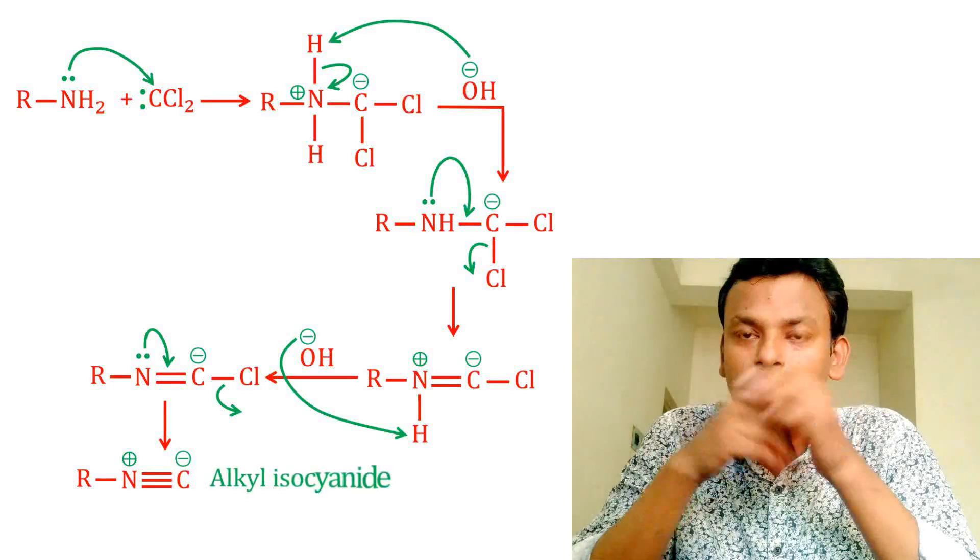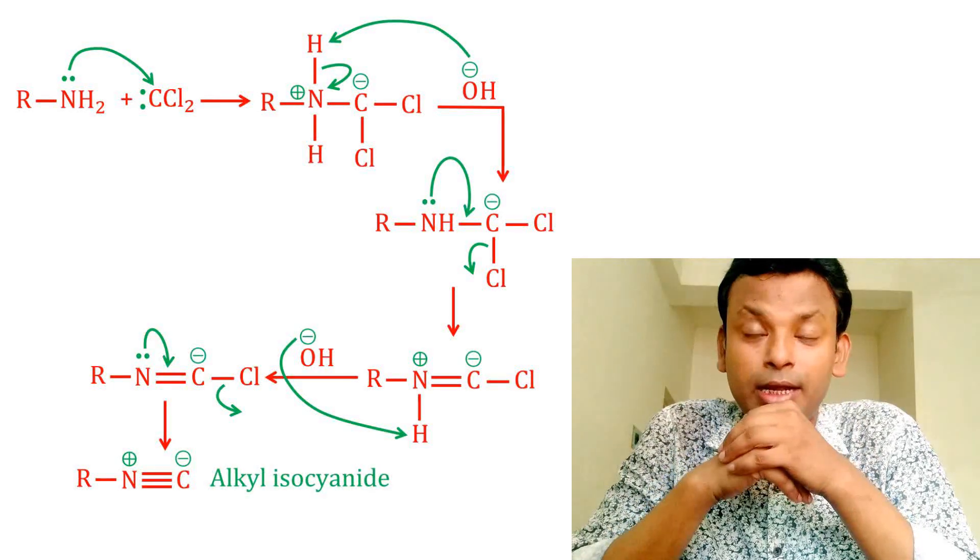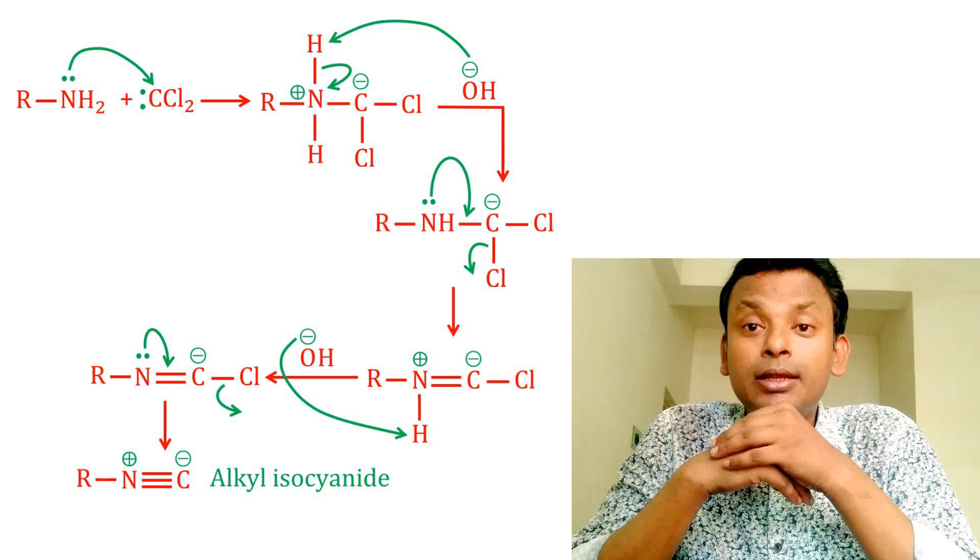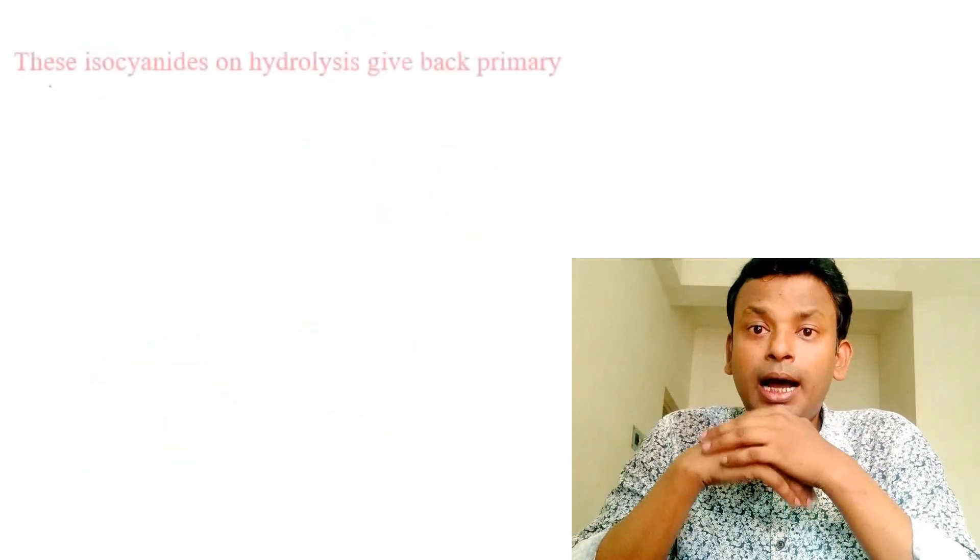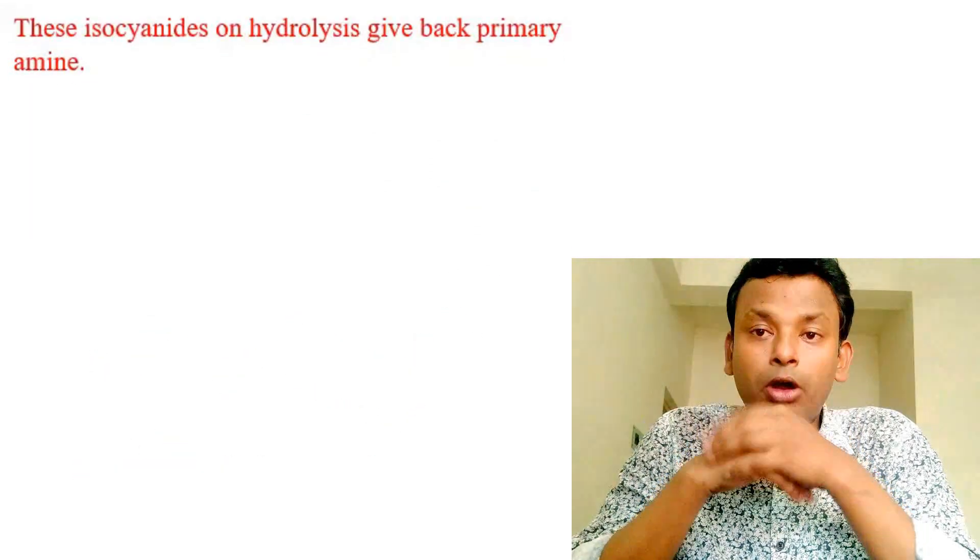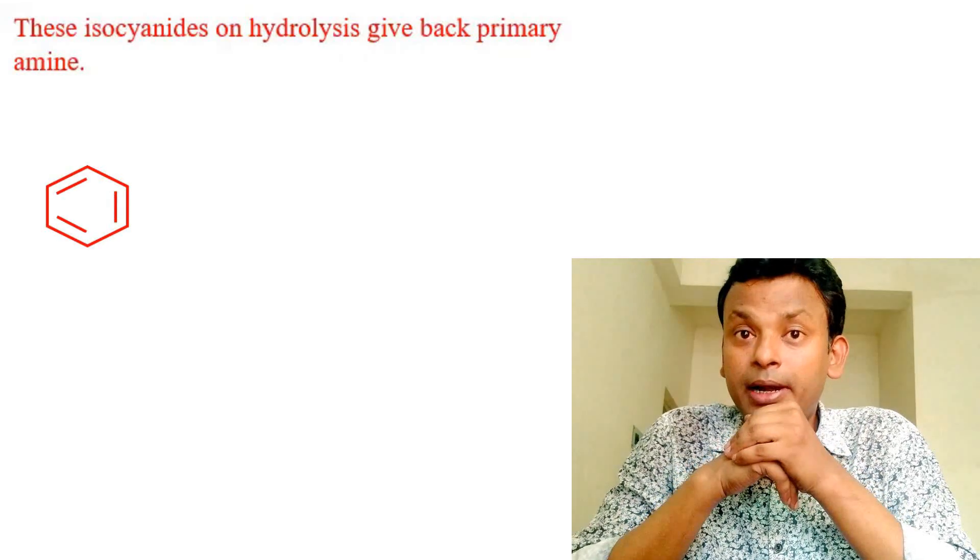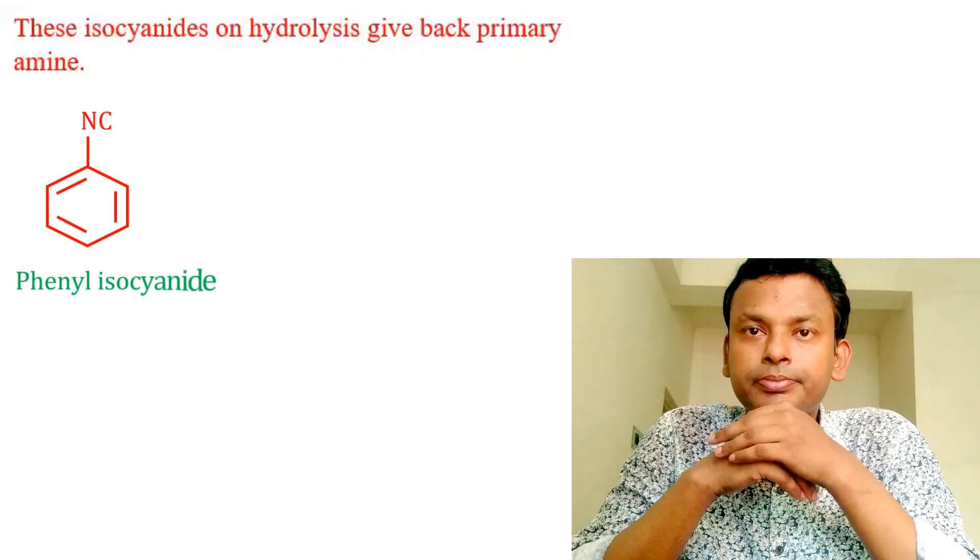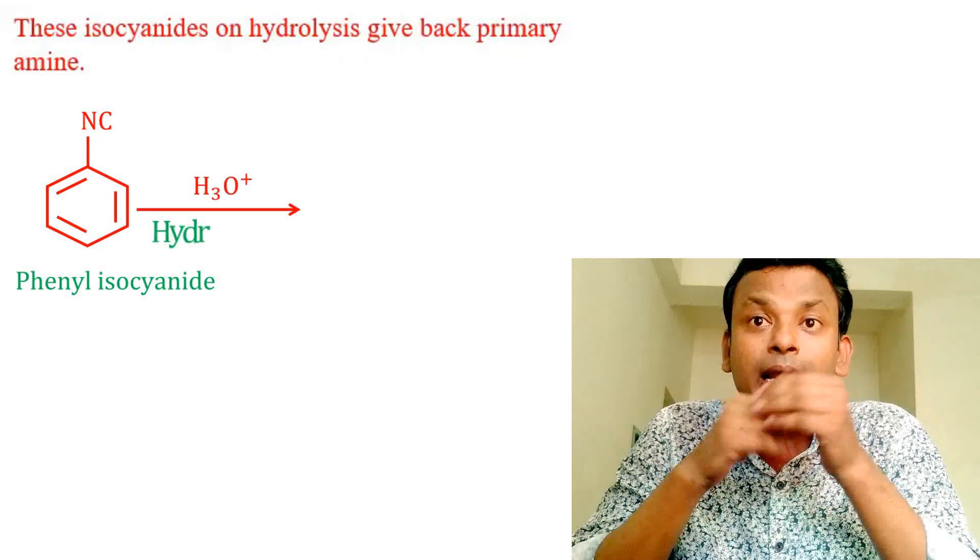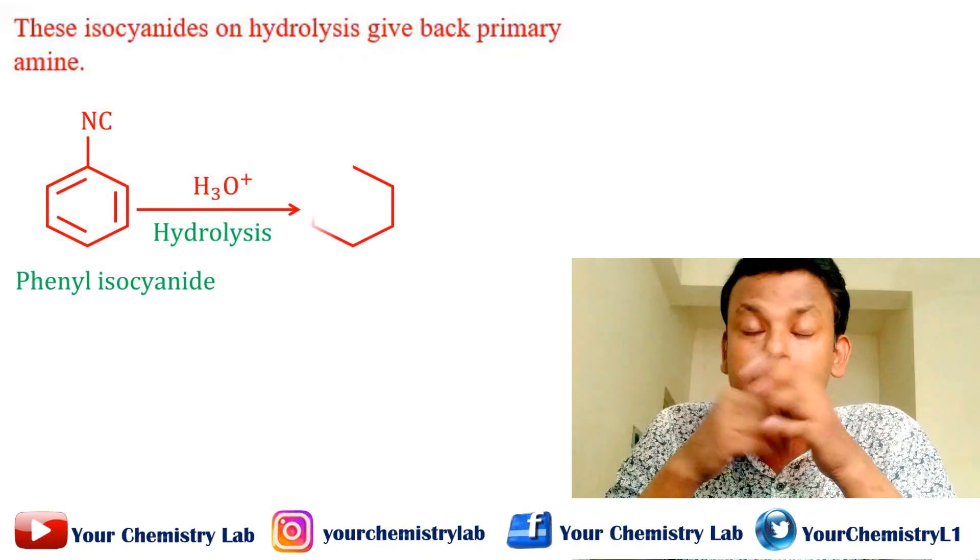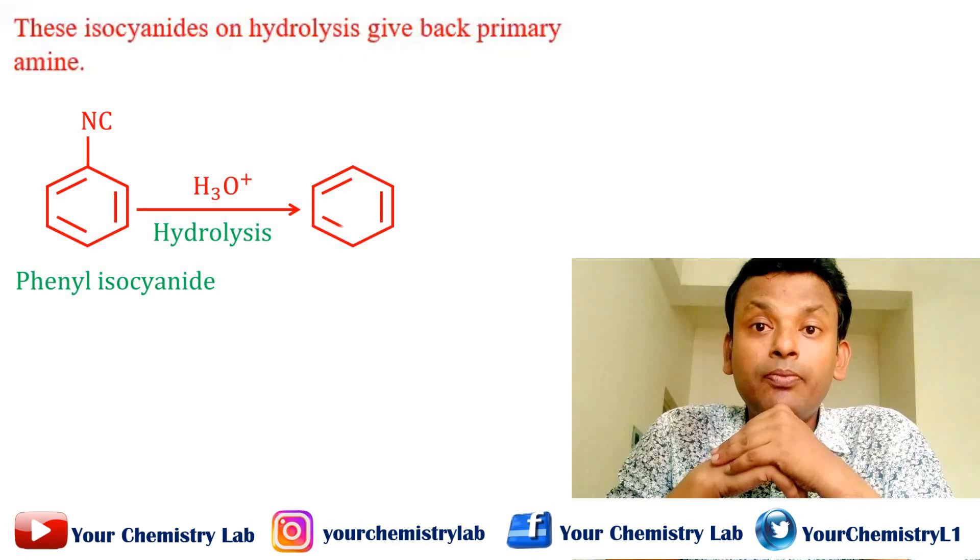Isocyanide on hydrolysis gives back a primary amine. Here, phenyl isocyanide on hydrolysis gives aniline and formic acid.